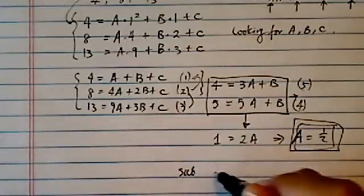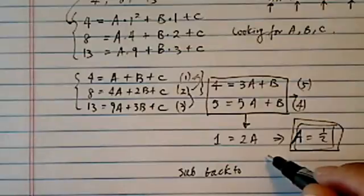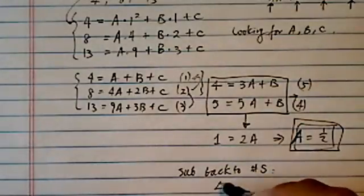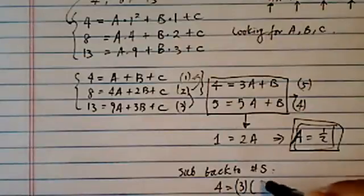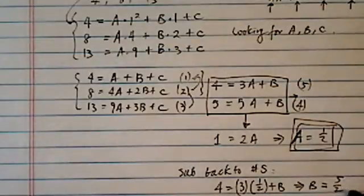Substituting, sub back to your choice, I end up picking number 5, equation number 5. I have 4 is equal to 3 times a, which is a half, plus b. This one gives me b is equal to five and a half.